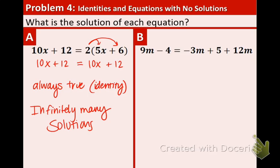And in part b, we have 9m minus 4 equals negative 3m plus 5 plus 12m. On the right side, I see a pair of like terms, so let's combine them. We have a negative 3m and a 12m. When we combine those, we're doing 12 minus 3, and that's 9m. Bring down the 5, and on the left side of the equals, just bring everything down to the next line.